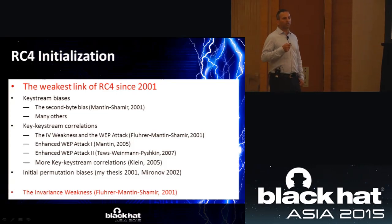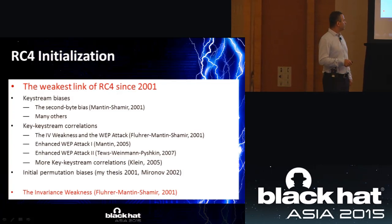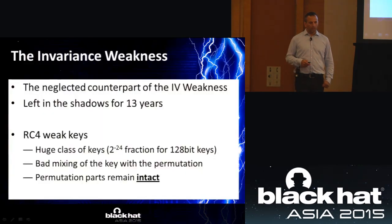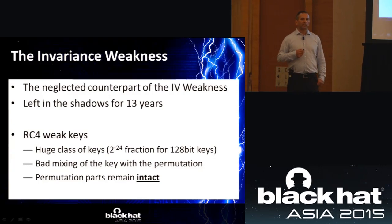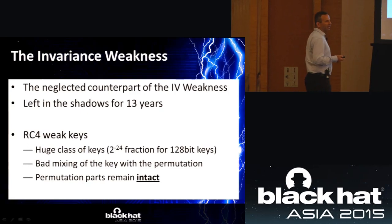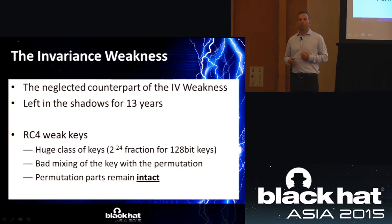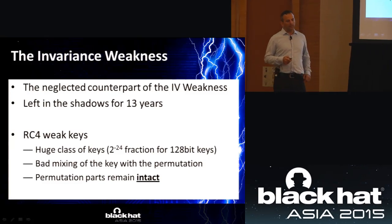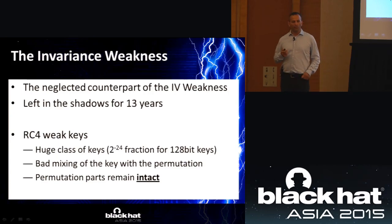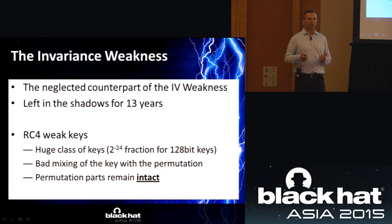The weakness I'm going to focus on in this session is the invariance weakness, which was published in the Fluhrer-Mantin-Shamir paper. In this FMS research, we described two weaknesses: the IV weakness and the invariance weakness. The first got a lot of attention because it was used to mount a practical attack on the WEP protocol. The second was left in the shadows for 13 years — now it is time to see the light. The idea of the invariance weakness is a class of RC4 weak keys. It is a very large class: every RC4 key has a probability of 2^-24 — which is 1 in 16 million — to be in this class.